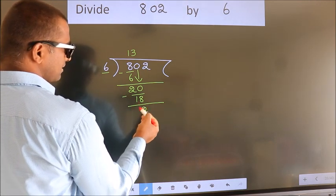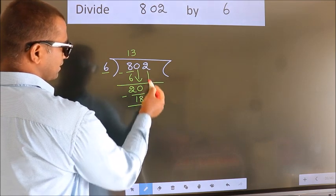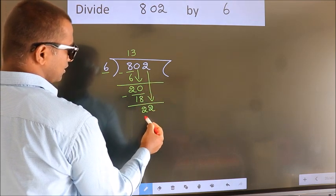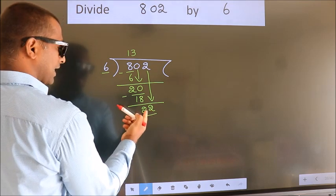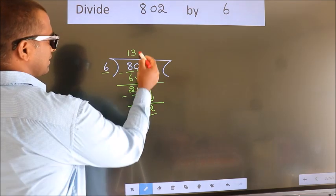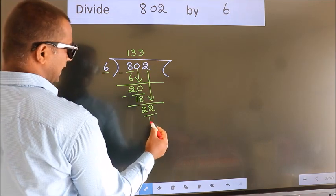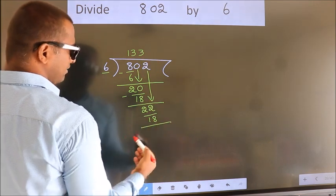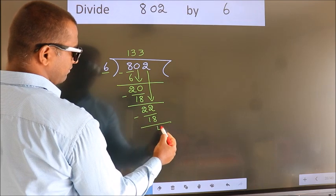After this, bring down the beside number. So, 2 down. So, 22. A number close to 22 in 6 table is 6 threes, 18. Now we subtract. We get 4.